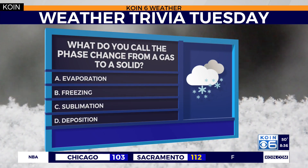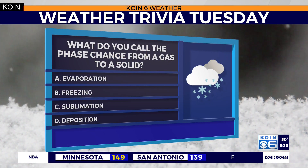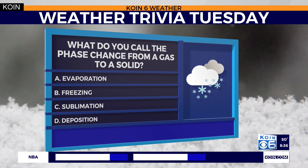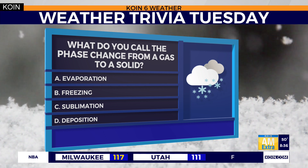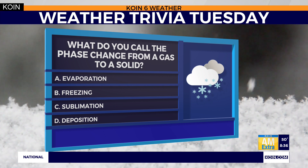What do you call the phase change from a gas to a solid? A few of these will be familiar. Evaporation is A, B is freezing — that one's pretty obvious, you know, you freeze water into an ice cube, so it's obviously not B. C is sublimation.